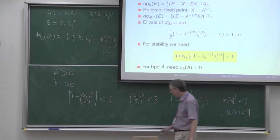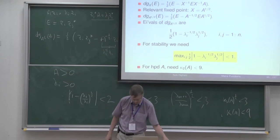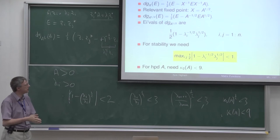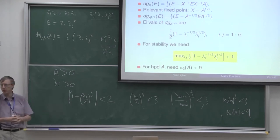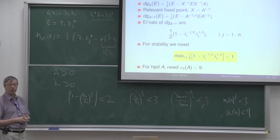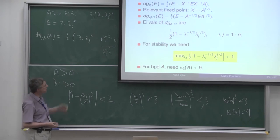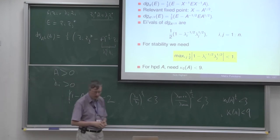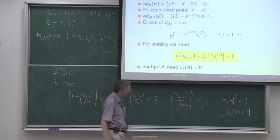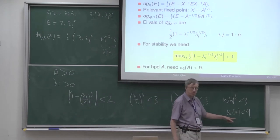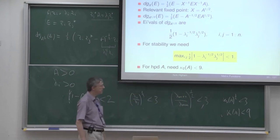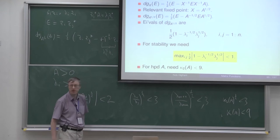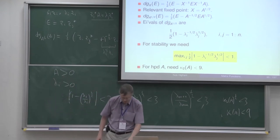The Fréchet derivative approach sounds complicated, but it's very general and actually quite easy to work with — you really just end up finding eigenvalues of a Fréchet derivative. What does this condition mean in practice? Well, the iteration is of virtually no practical use whatsoever. You can hardly find any matrices with condition number less than 9 — it's an extremely strong condition. You'd have to be virtually the identity matrix. So in its basic form, this Newton iteration is not a good idea.